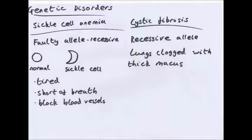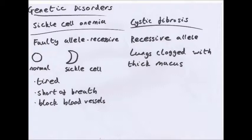Two genetic disorders you need to know about are sickle cell anaemia and cystic fibrosis. Sickle cell anaemia is caused by recessive alleles — you need two copies of the recessive allele to have the disorder, but you can be a carrier with one dominant and one recessive. It causes red blood cells to go into a sickle shape, meaning they can't carry as much oxygen, so sufferers become tired and short of breath, and blood vessels can get blocked. Cystic fibrosis is also caused by recessive alleles — you could carry the gene but show no symptoms. The lungs get clogged with thick mucus, which also blocks the tubes that carry enzymes to the small intestine, resulting in weight loss and difficulty breathing.